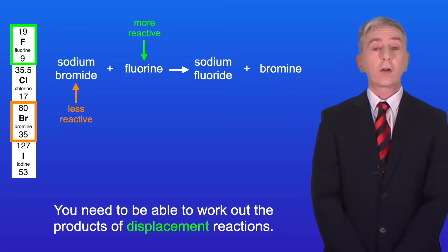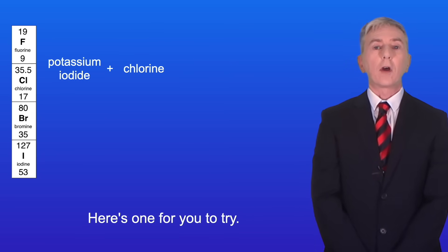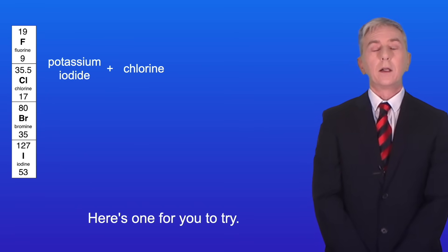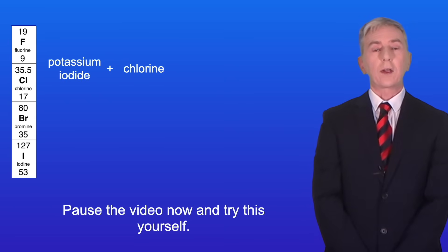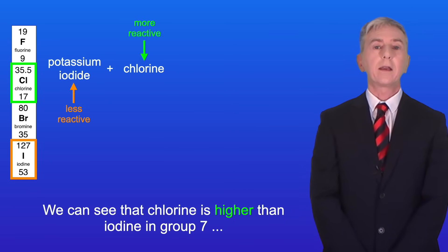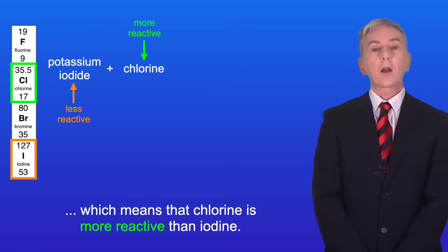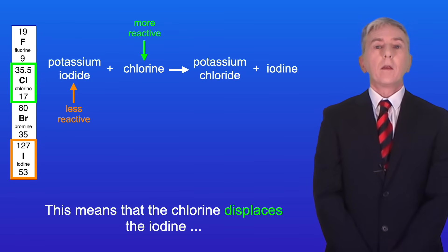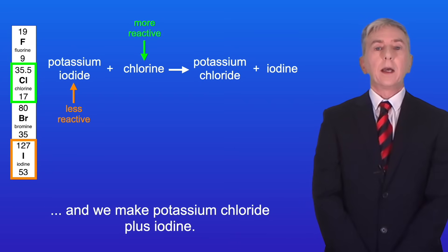You need to be able to work out the products of displacement reactions. Here's one for you to try: potassium iodide plus chlorine — pause the video now and try this yourself. Chlorine is higher than iodine in Group 7, which means that chlorine is more reactive than iodine. This means that the chlorine displaces the iodine and we make potassium chloride plus iodine.